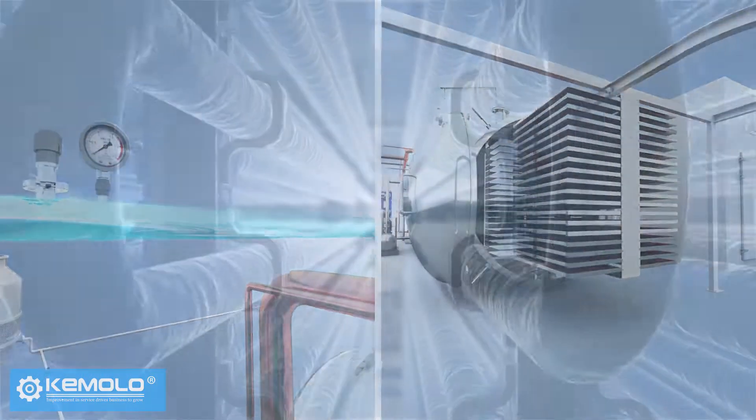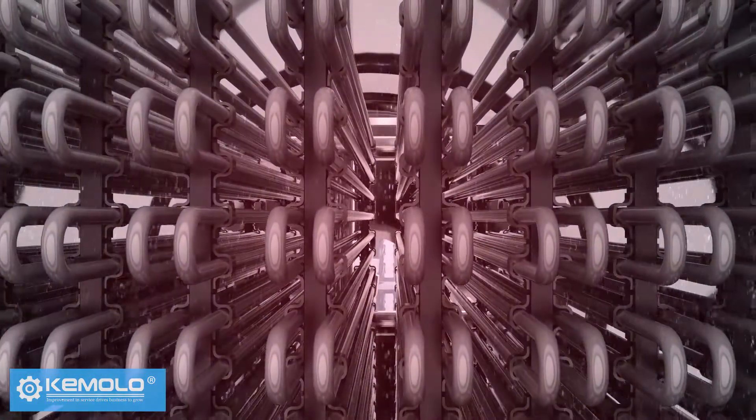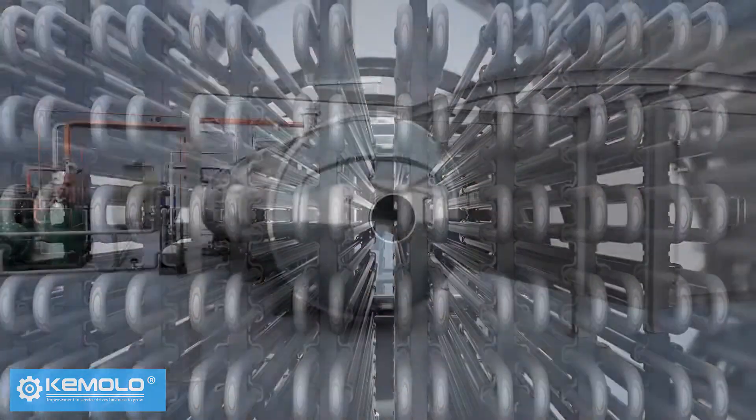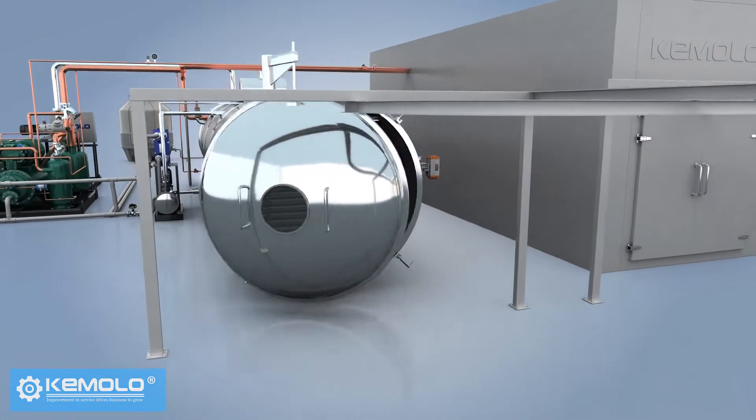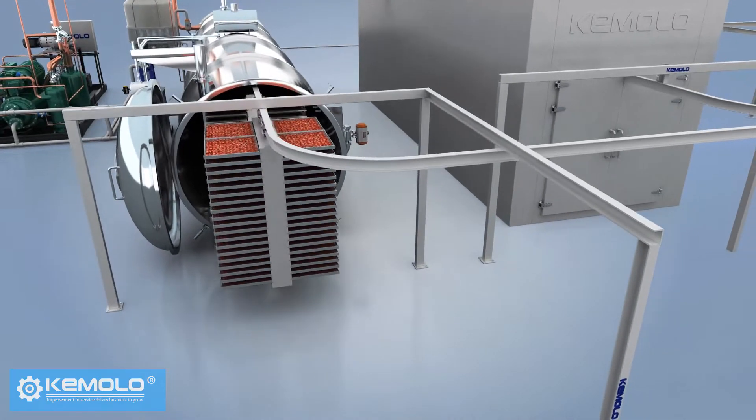After discharging, the frost on the water vapor collector needs to be defrosted for the next batch of production. Therefore, the freeze drying must be produced in batches and the interval between each batch is about 1-2 hours.